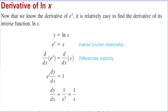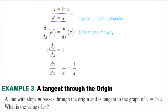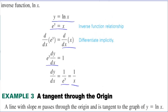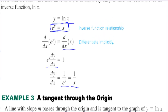Derivative of natural log of x. Now that we know the derivative of e to the x, it's relatively easy to find the derivative of its inverse function, natural log of x. Start with y equals natural log of x, then raise both sides to e: e to the y equals x. Implicit differentiation gives e to the y times dy/dx equals 1. Divide by e to the y, but e to the y equals x, so the derivative of natural log of x is 1 over x, times the derivative of the inside by the chain rule.